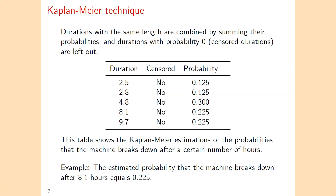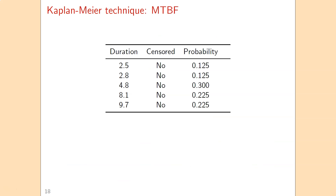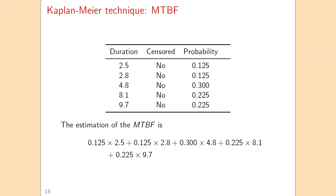To give an interpretation: with probability 0.225 the machine breaks down after 8.1 hours. The mean time between failures is then estimated as a weighted sum — the machine breaks down after 2.5 hours with probability 0.125, after 2.8 hours with probability 0.125, and so on. Taking the sum of all those products gives an estimate of the mean time between failures of 6.108 hours.